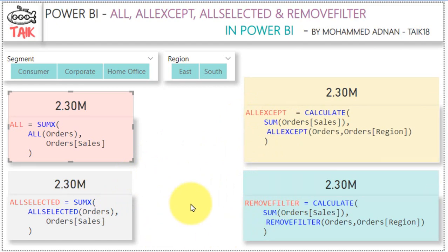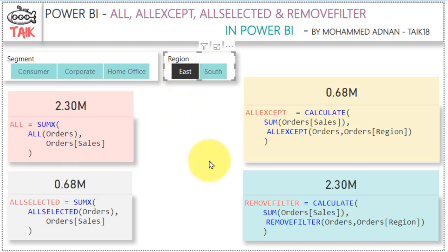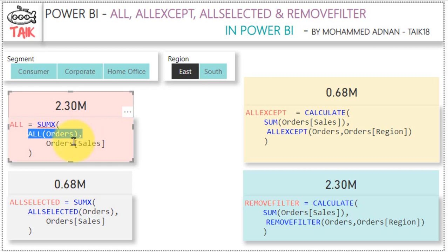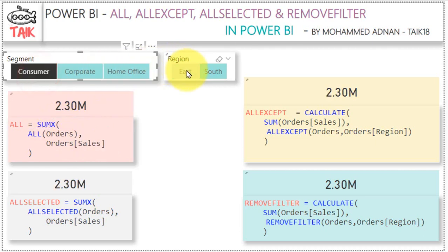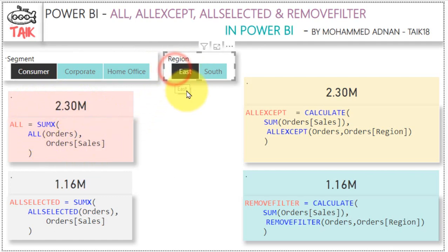Everything has the same value here because no filter has been applied to the Orders table or to the Region table. Now I am going to apply a filter on Region East. Two of the values have changed. If you look at ALL, whatever filters have been applied to this Orders table, it removes them and takes the complete table without any filtration to calculate the SUMX of sales value. So whatever filter I apply here is not going to affect ALL — by default it returns all values from the table.